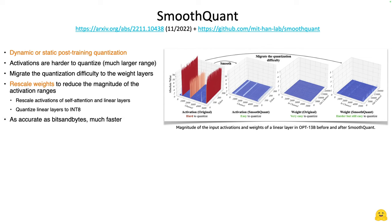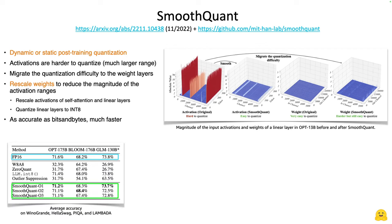The result is that SmoothQuant is as accurate as bits and bytes, which we covered in the previous video, but it is much faster. Here's a benchmark with very large models — OPT-170B, BLOOM-176B, GLM-130B — and we see the FP16 baseline in blue. SmoothQuant results show we pretty much match the accuracy of the baseline, quantizing from FP16 to INT8 with zero performance degradation.